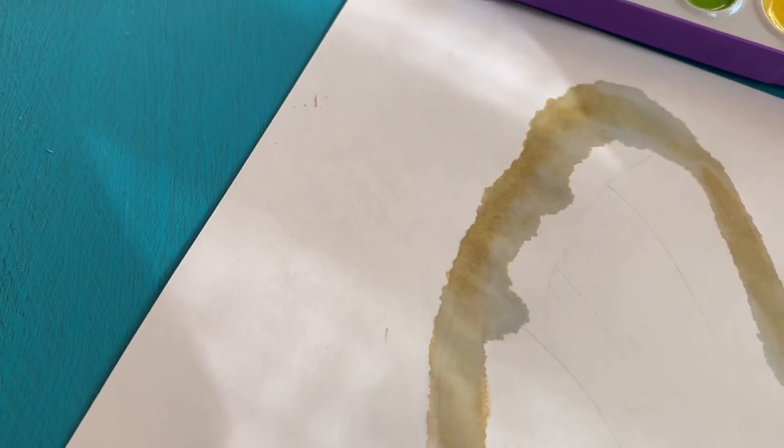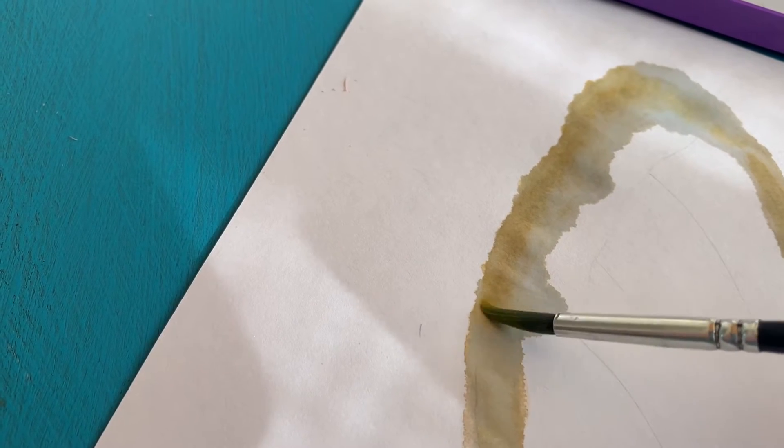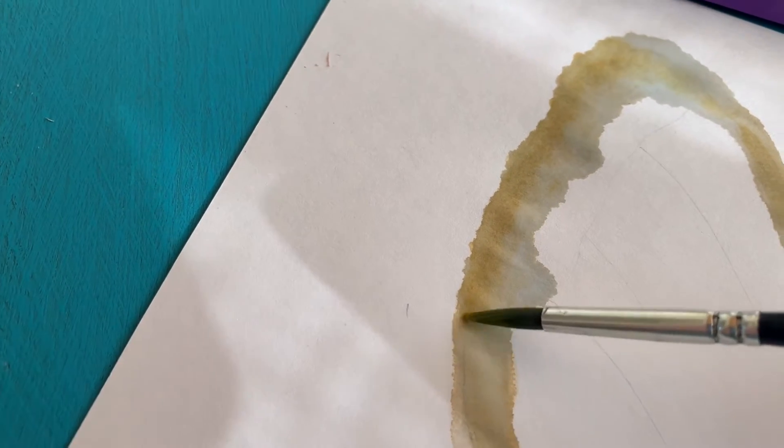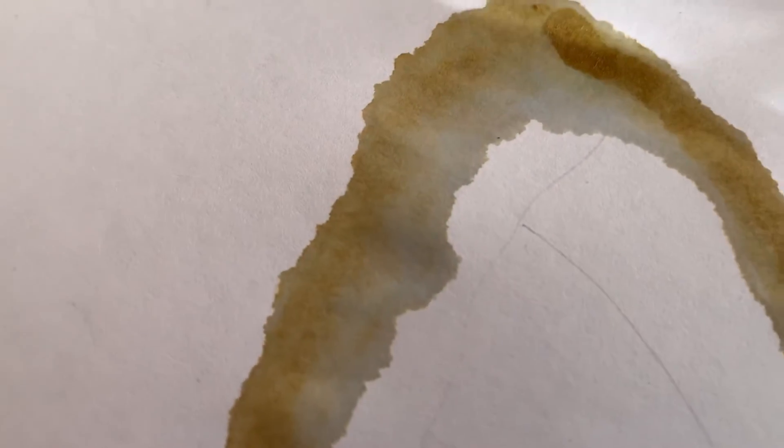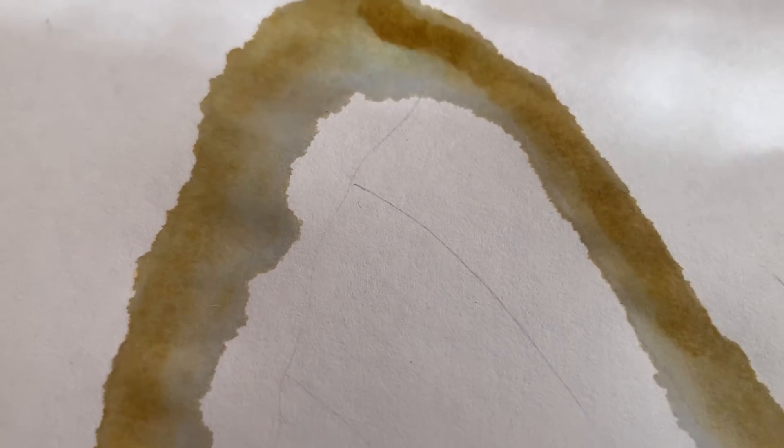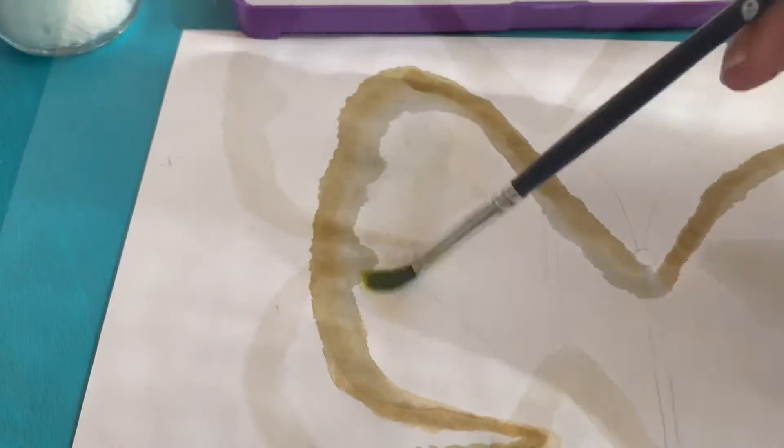Next, you're going to re-dip the colors and you're only going to focus on the outer edge like so. You're going to see a dark gradient and a light gradient. It's going to create a little ombre effect like so.